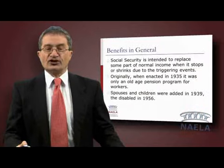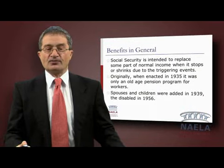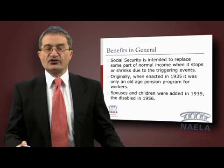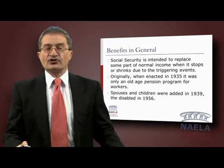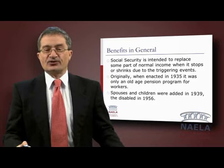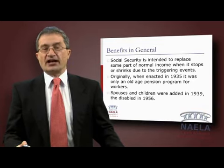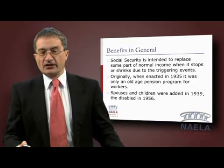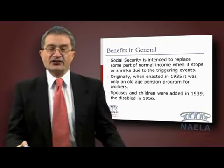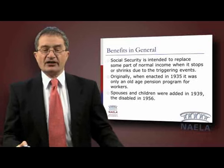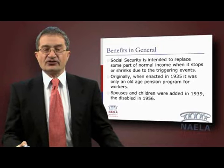Social Security is intended to replace some part of normal income when it stops or shrinks due to the triggering events. Originally, when enacted in 1935, Social Security was only an old-age pension program for workers. Others were added later — spouses and children in 1939, the disabled in 1956.